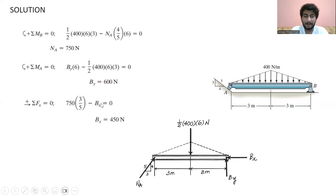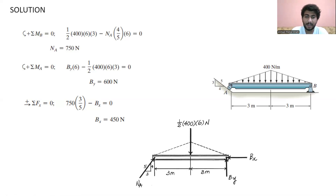Applying the equilibrium conditions for all forces in the x-direction, we get 750 newtons as the reaction force at point A and its horizontal force component, which is base over hypotenuse, that is 3 over 5. Negative, because we have the force at point B in the opposite x-direction. So we get the reaction force at point B in the negative horizontal direction, which is about 450 newtons.